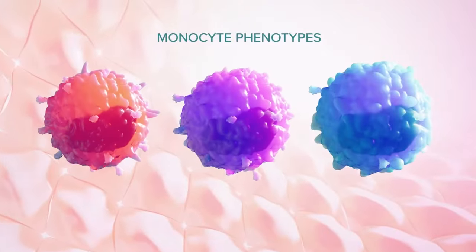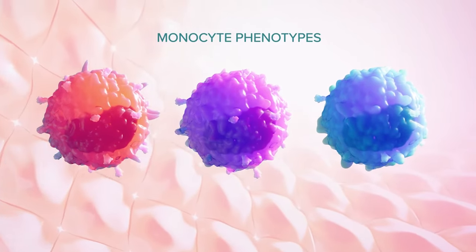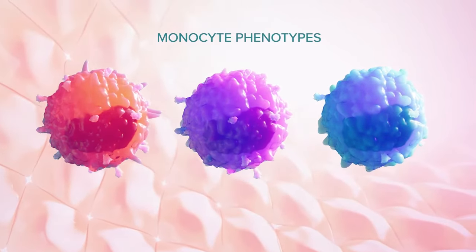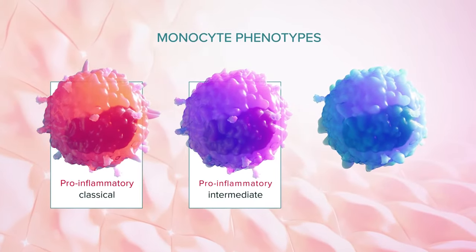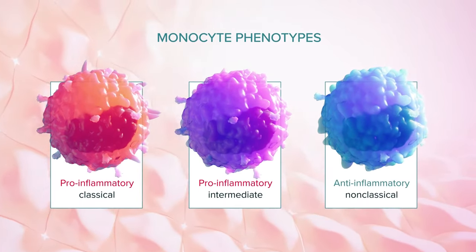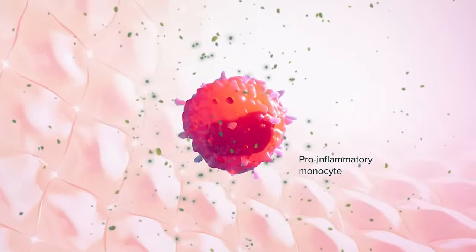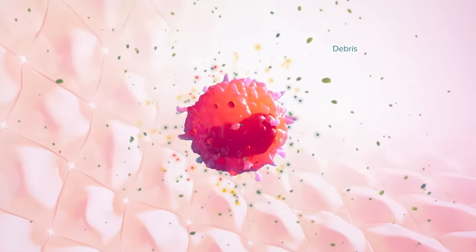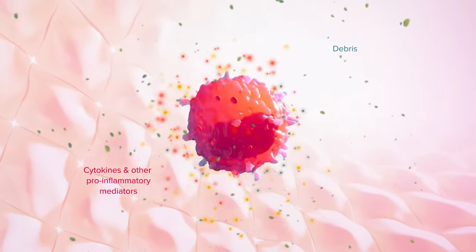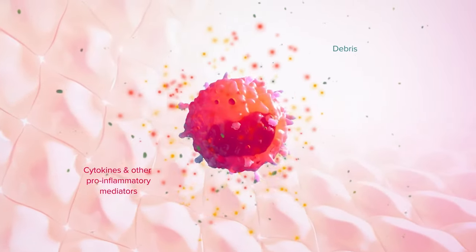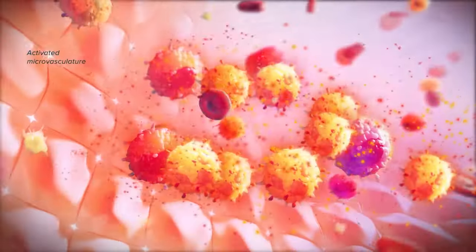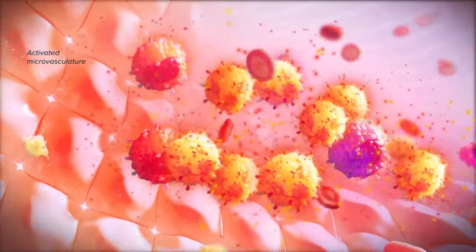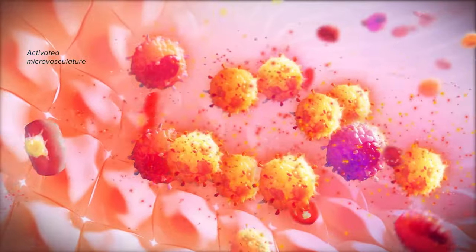Monocytes are the largest in size compared to other white blood cells and exist as different phenotypes. These can be either pro-inflammatory or anti-inflammatory, with the latter playing a more reparative role. In acute kidney injury, the majority of monocytes are pro-inflammatory, digesting debris as well as releasing cytokines and other harmful inflammatory mediators. When pro-inflammatory and anti-inflammatory signals are no longer in balance, hyperinflammation is perpetuated.